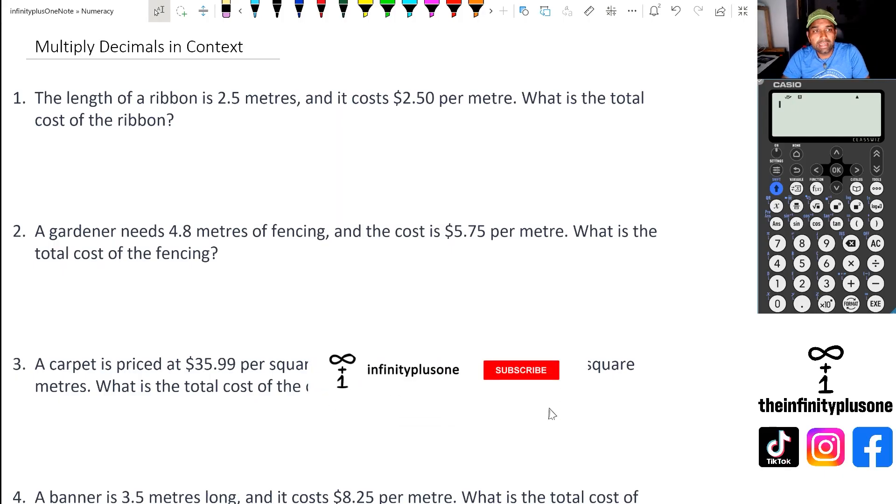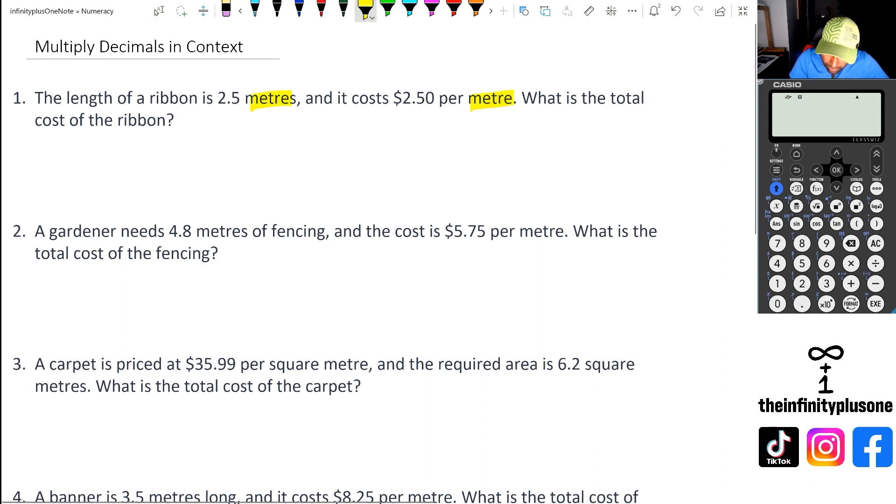Looking at question one, we've got length of a ribbon is 2.5 meters, it costs $2.50 per meter. One of the key things worth mentioning in these types of questions is actually checking what you have here. You've got $2.50 per meter, and you've got 2.5 as the number of meters. So we're going to figure out what it costs.